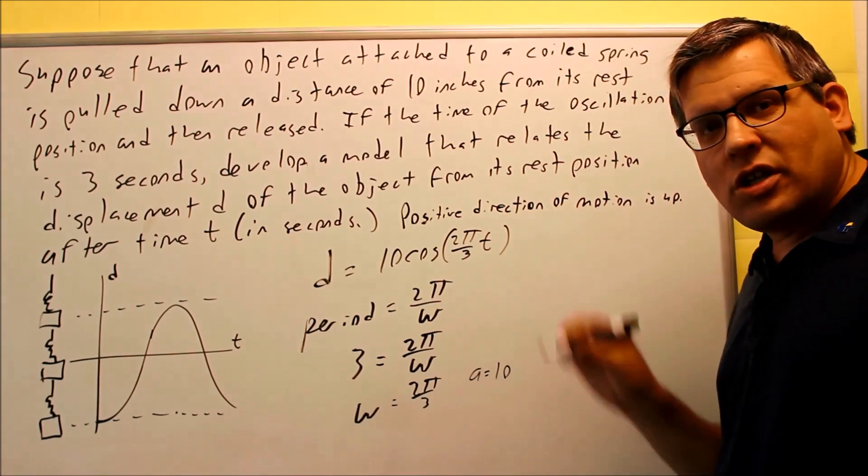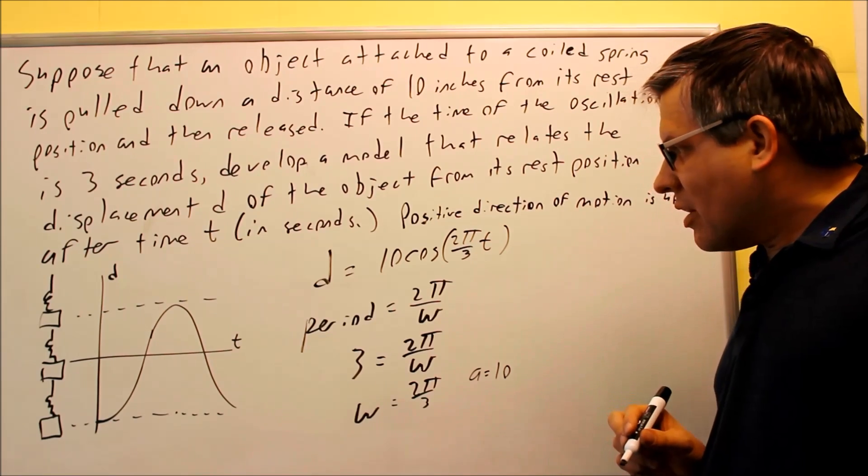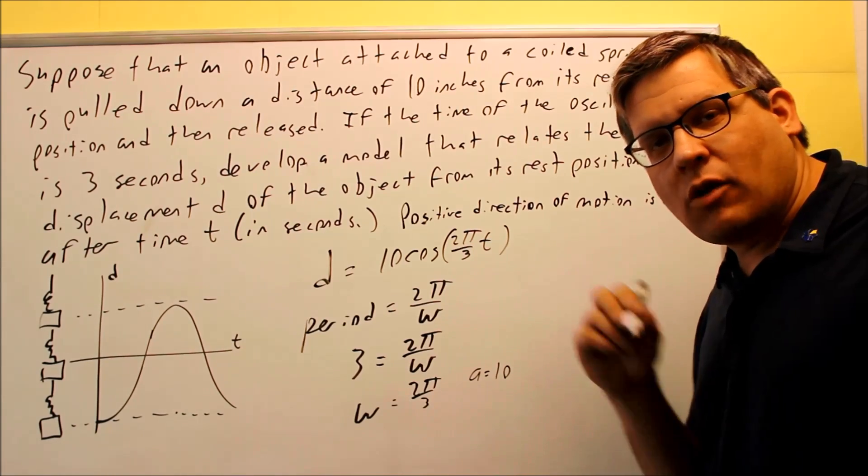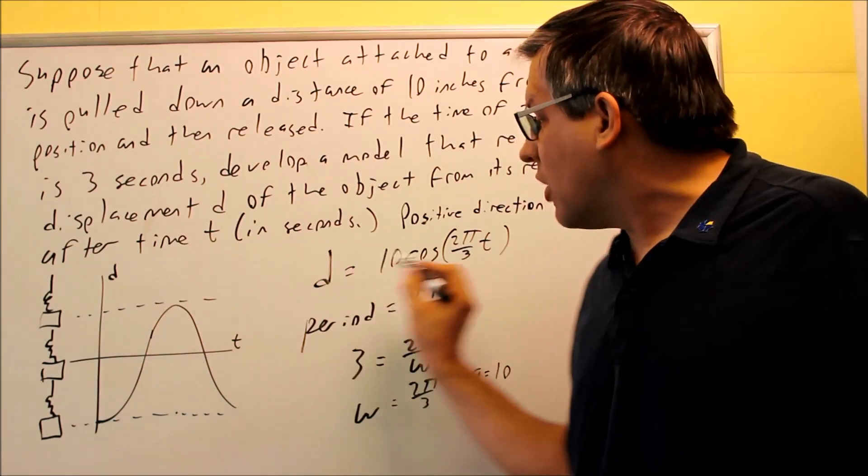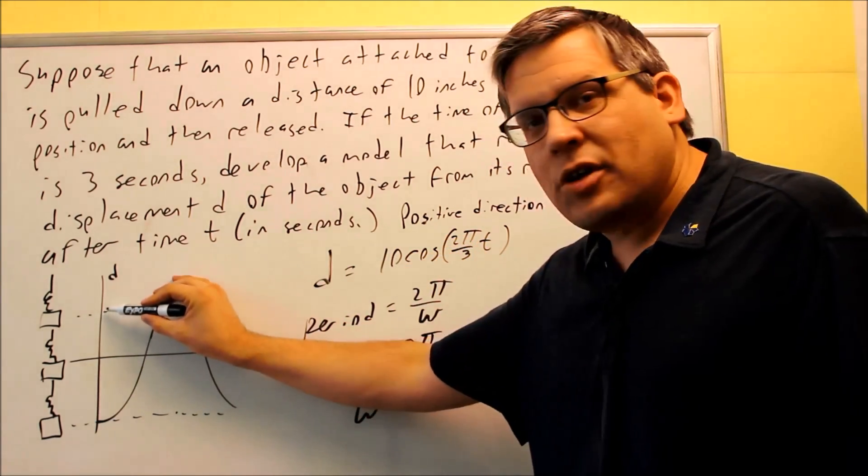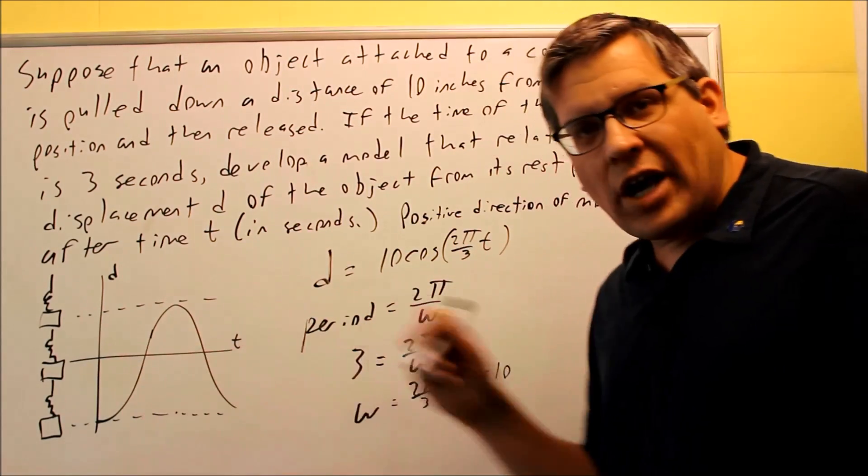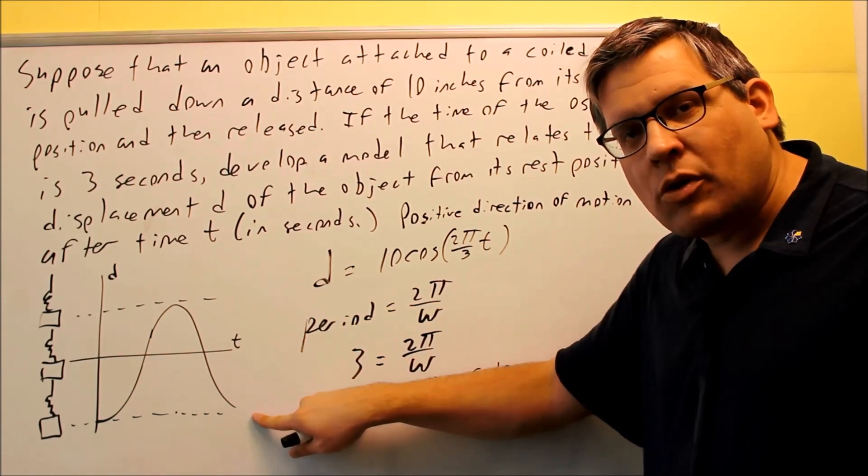Now this is not considered correct yet. The reason why is because regular cosine graphs, when you draw them, going back to the section where we were graphing sines and cosines, the cosine graph actually always starts at whatever this is. So if it's 10, I would start it up here at 10. However, this problem, I'm beginning by pulling it down. So I'm actually starting it down at that position.